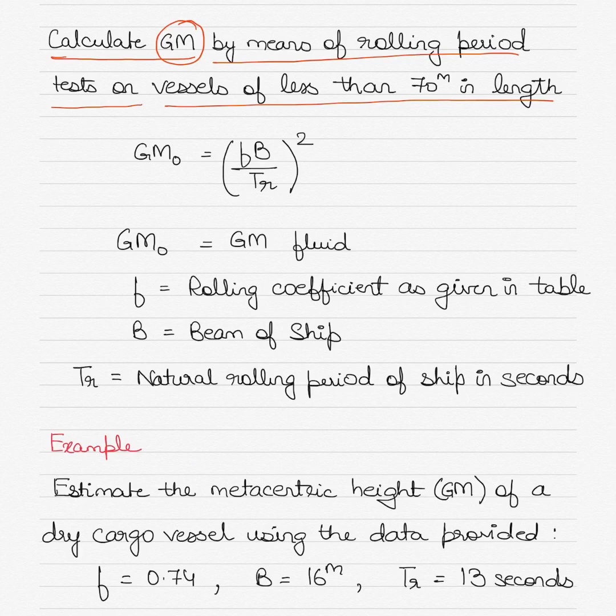The formula for that is GM₀, which is initial GM, equals f times B divided by TR, the whole bracket squared. In that, GMo is the GM fluid.